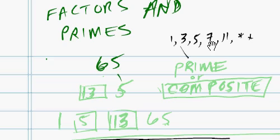So let's find all factors of 65 and determine whether it's a prime or composite.